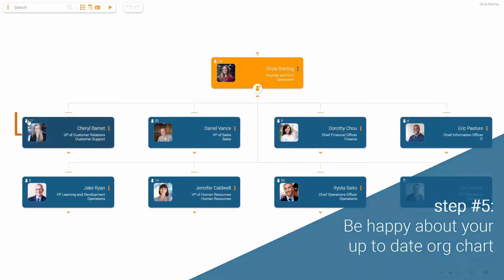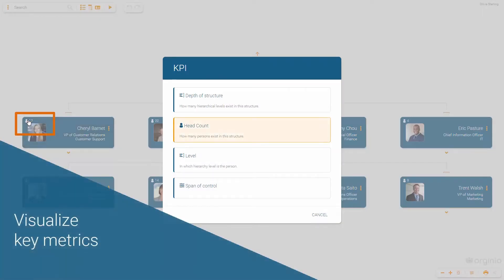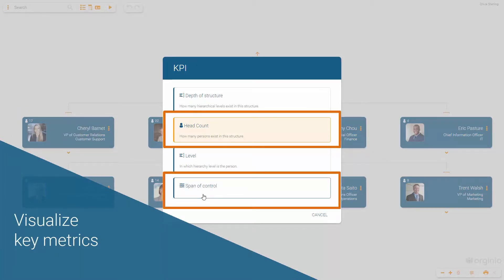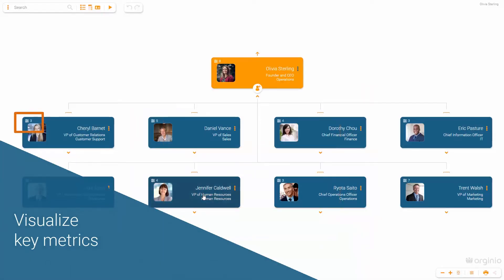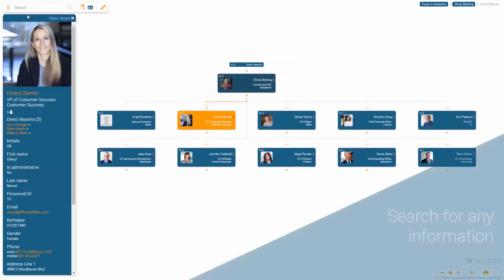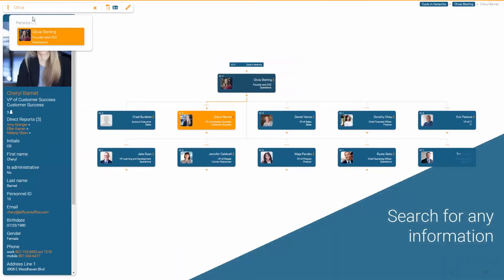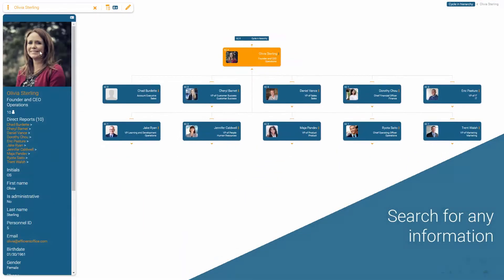Within your org chart, visualize KPIs such as headcounts, span and control. Do a search for individuals, and if needed, share the org charts electronically.